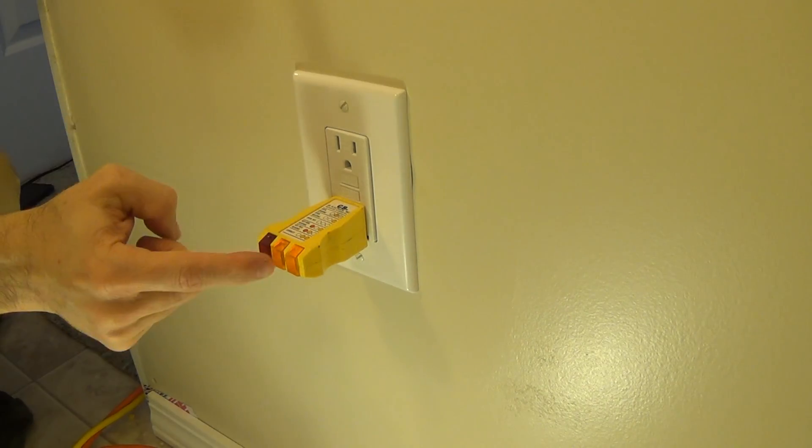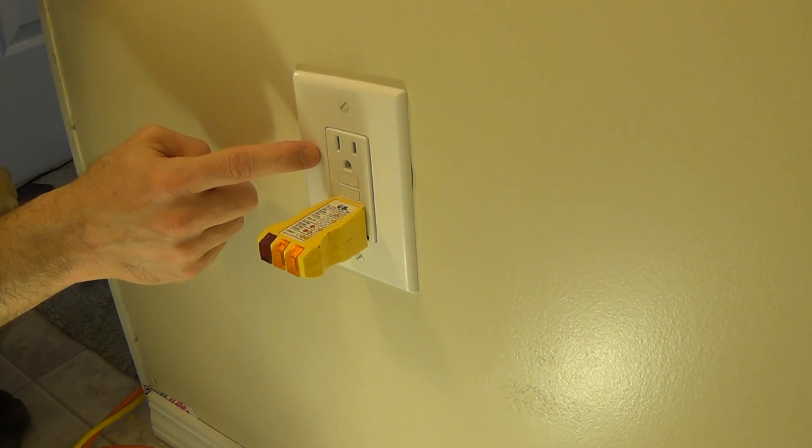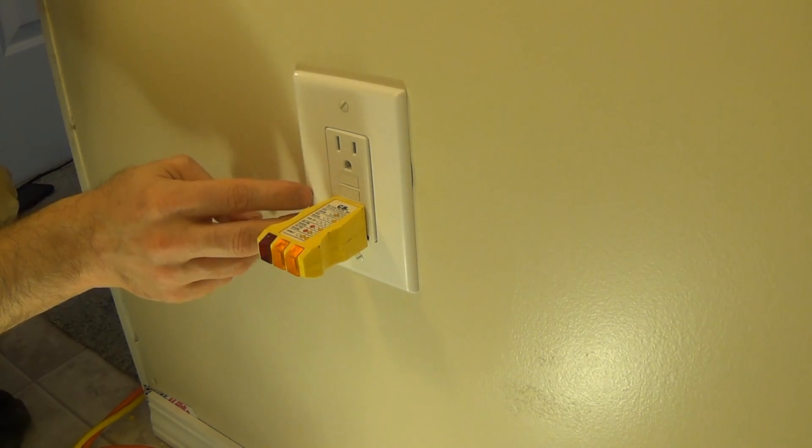And to reset it, you just hit this upper button right here and there you go, it's back on. So I hope this video helped you out on how to wire these things. It's pretty easy, just like a normal receptacle with a couple of little tweaks. But I'll see you next time, bye bye.